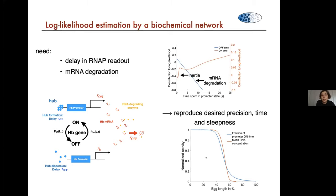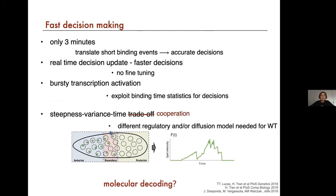So just to show that this can be done by a biological system — that's it. I basically wanted to show that this is a process that happens very fast. The fact that it happens very fast does influence the molecular encoding and clearly restricts what is possible. It seems that bursty transcription and activation leading to long tails is important, and steepness, variance, and time work together to construct a regulatory network. If you don't restrict to constant-time integration, you can get decisions that are much faster. Thank you.